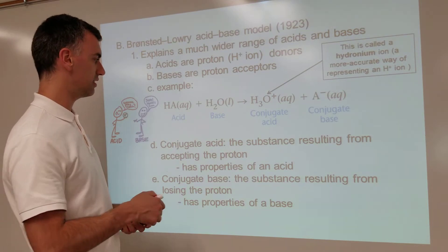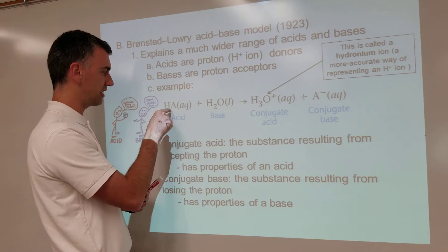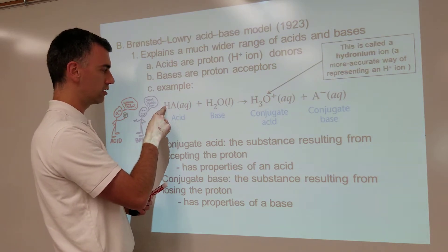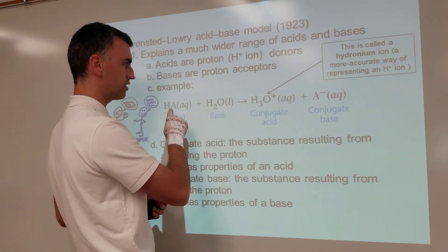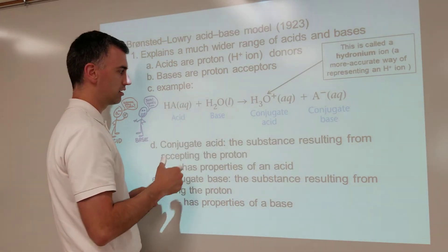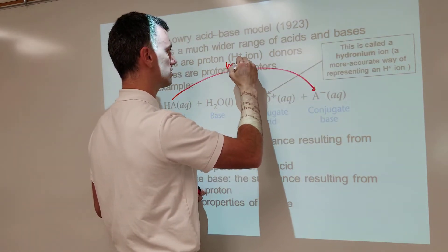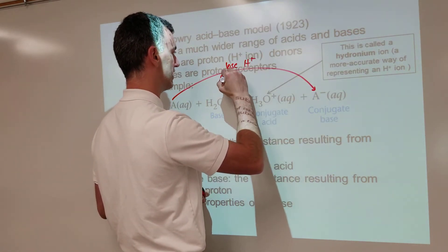So the idea is that this one is an acid because it gives away a proton, it gives this hydrogen away, turns into this. So in order to turn to this, it has to give away a hydrogen. That's what makes it an acid. In order to go from this to this, it must lose a hydrogen ion, that's why it's an acid.